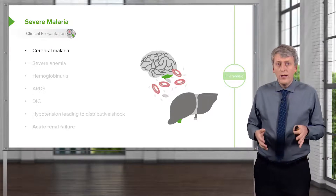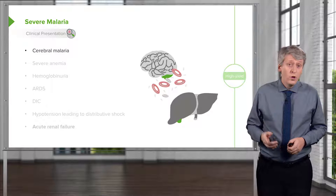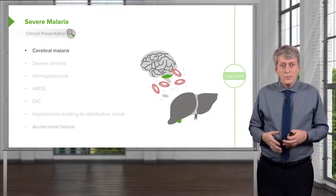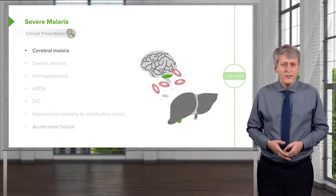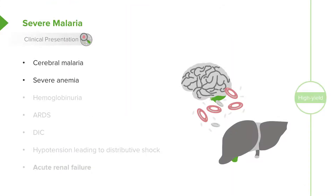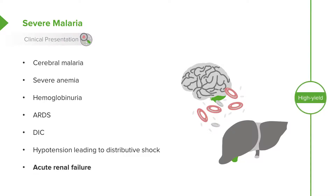More severely, malaria can present with really large problems. One of those is cerebral malaria, which is overtly dangerous — these patients can have altered mental status and be very, very sick. Patients may develop severe anemia so low they may require transfusions, and they may develop hemoglobinuria, a darkening red-brown color to the urine. In severe cases, they can go into ARDS, or acute respiratory distress syndrome, and may develop frank DIC, or disseminated intravascular coagulation. Patients may also go into distributive shock with hypotension, requiring fluid resuscitation or dopamine, and can go into acute renal failure.